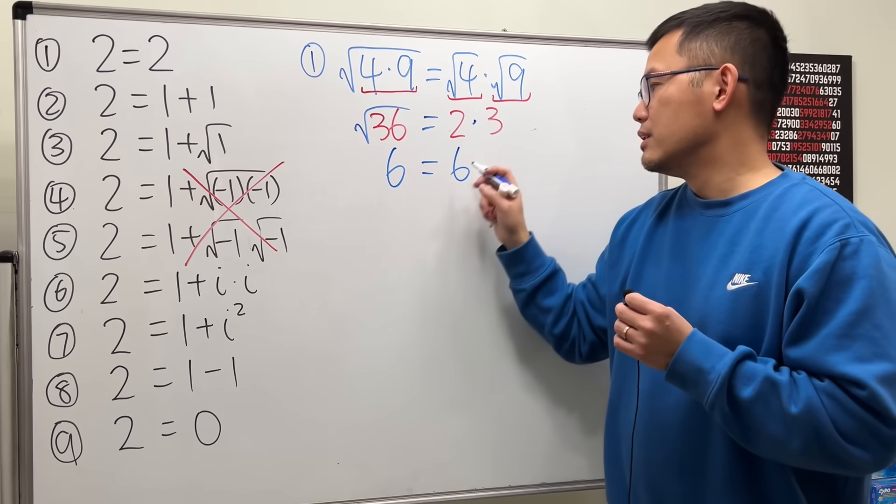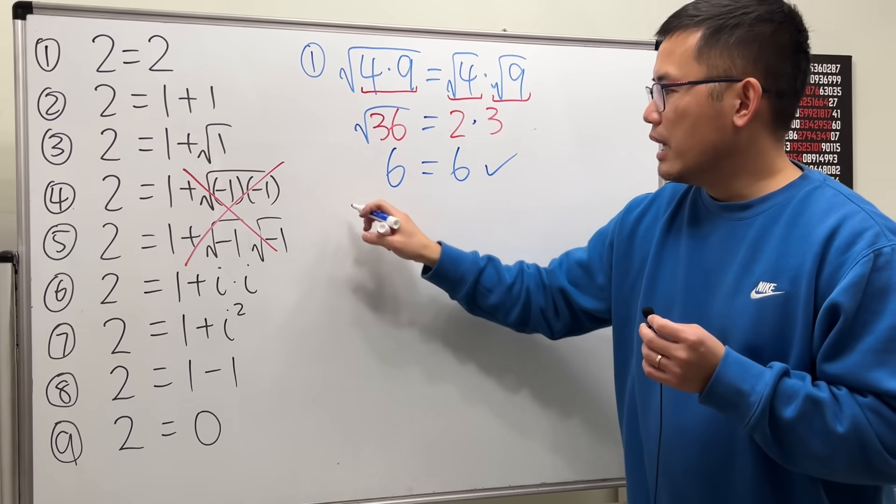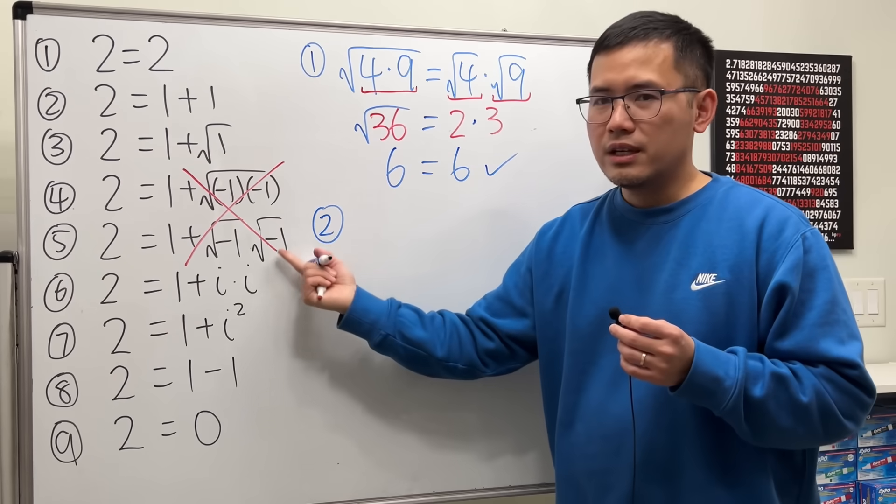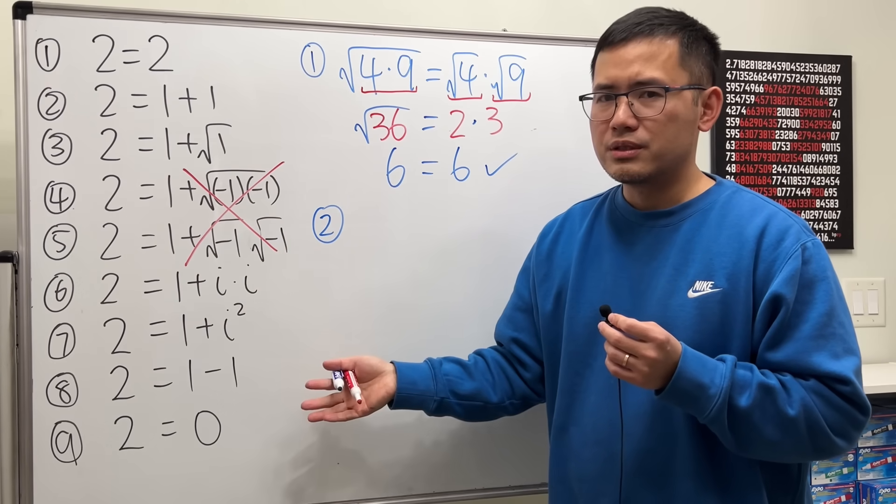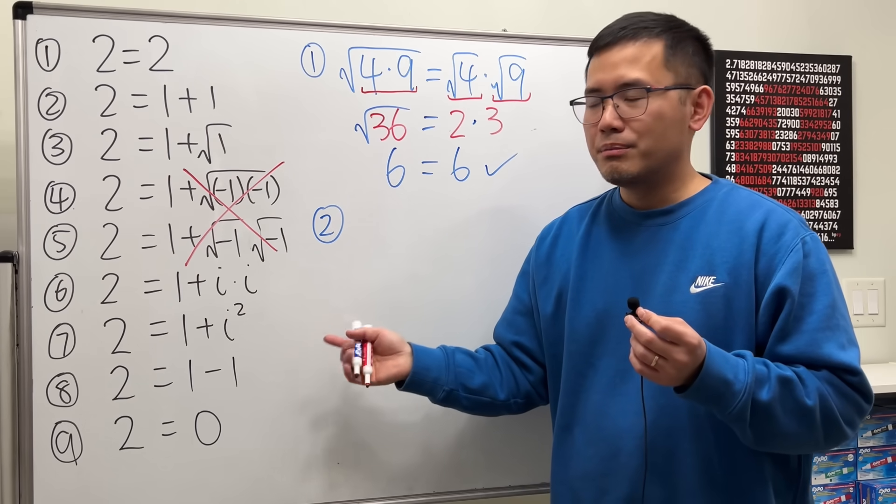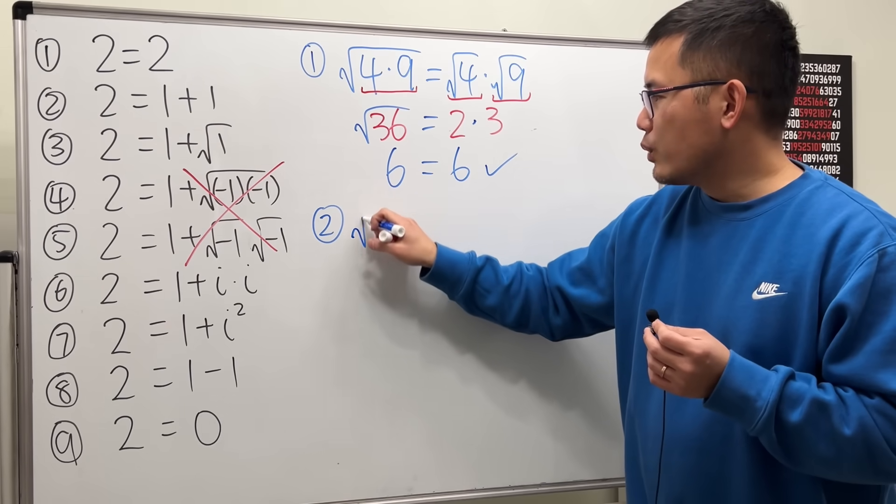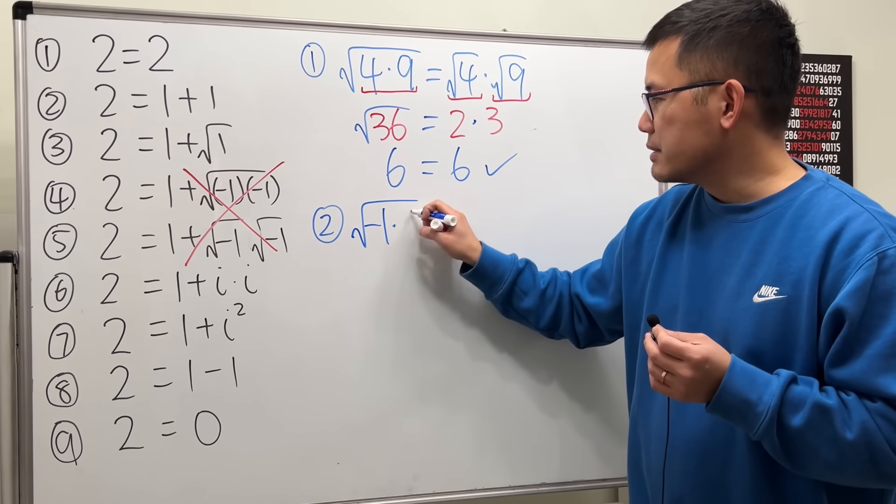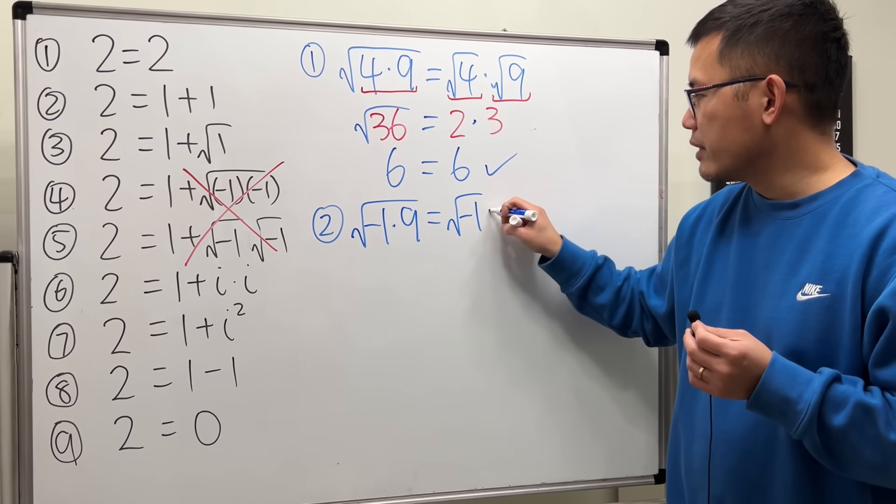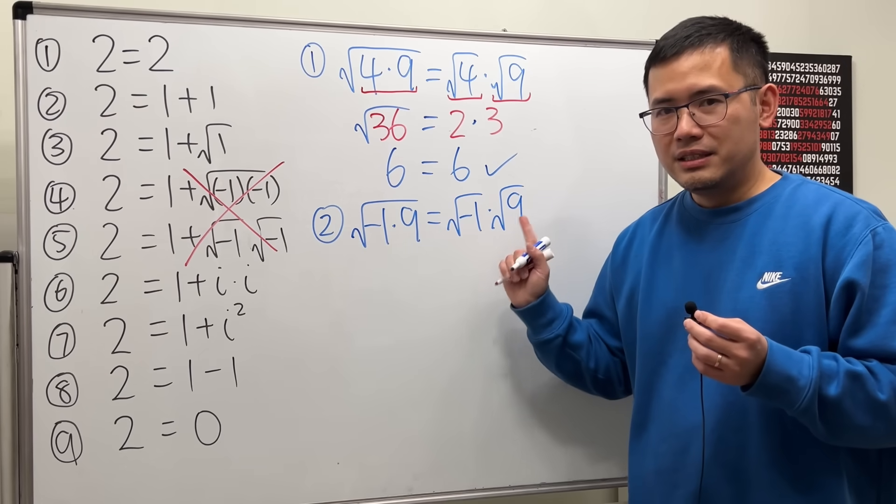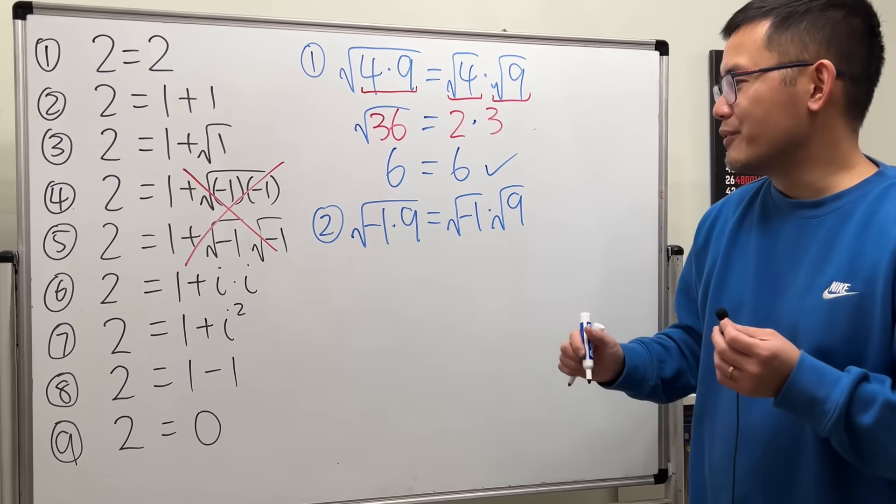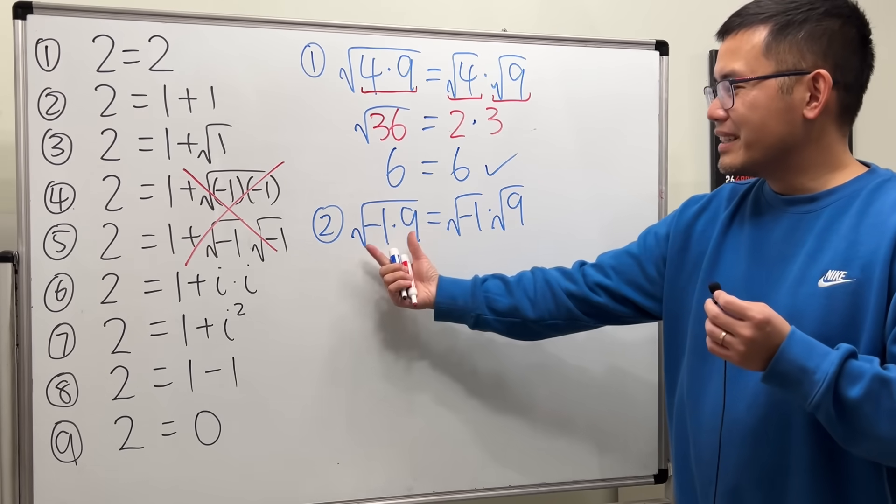And then maybe because we're dealing with negative numbers and also complex numbers, so maybe that's the reason. But be careful. If we have square root of negative 1 times 9, can we say that as square root of negative 1 times square root of 9? The answer is yes, if you consider the principle value of the square root.